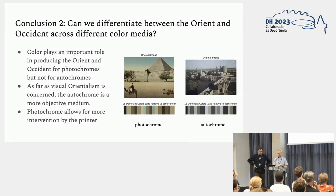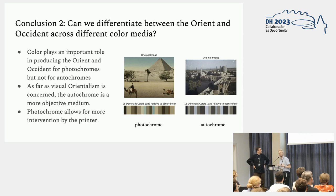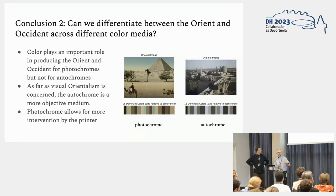Conclusion two: can we differentiate between Orient and Occident across different color media? For photochromes, we can; for autochromes, we cannot. As far as visual Orientalism is concerned, the autochrome is in this sense a more objective medium — it shows the world as it is and doesn't really give the maker the opportunity to use visual phantasms or exaggerations of how the Orient might have looked. The photochrome allows for more intervention by the printer — the person adding the colors.